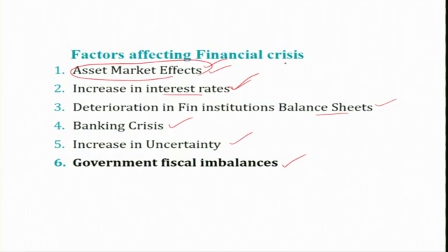Any of these things can happen and lead to financial crisis. These kinds of things are happening often, but when policymakers recognize them and do some policy intervention it will be neutralized. When it goes out of control and becomes significant and considerable, that leads to a financial crisis.